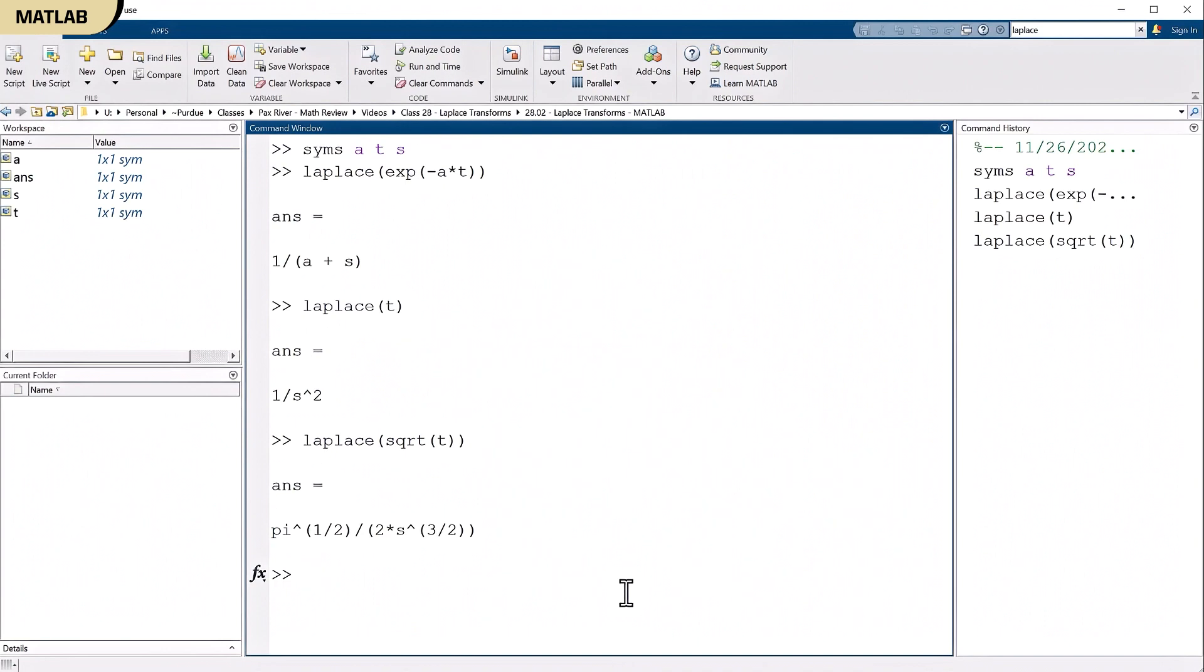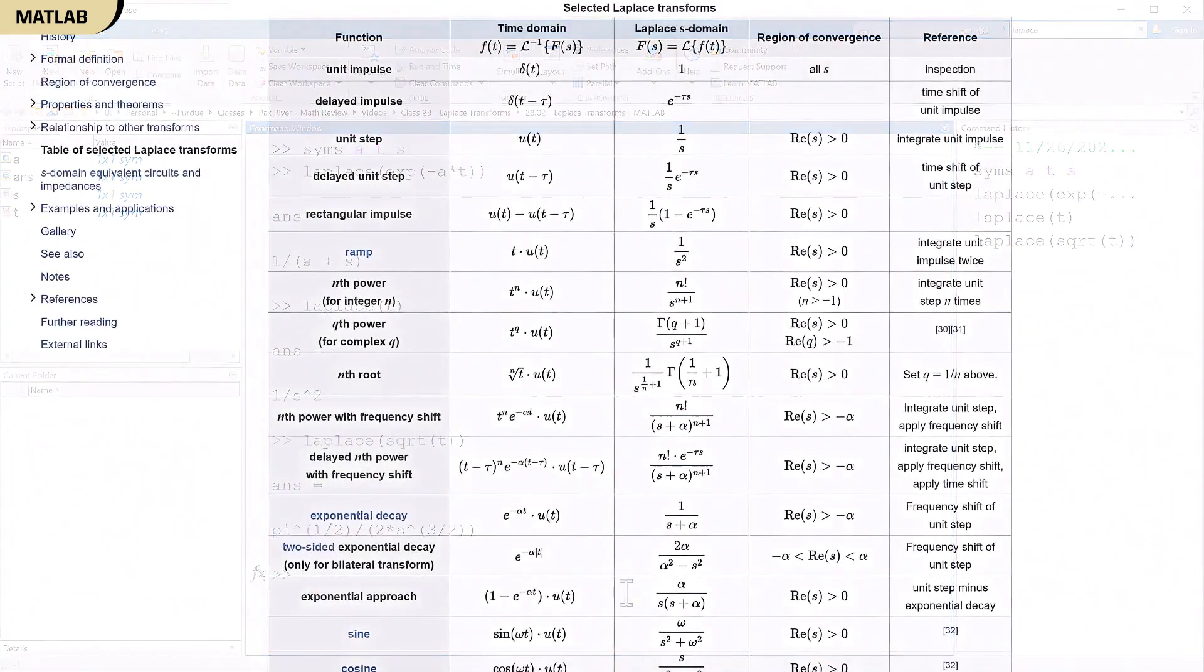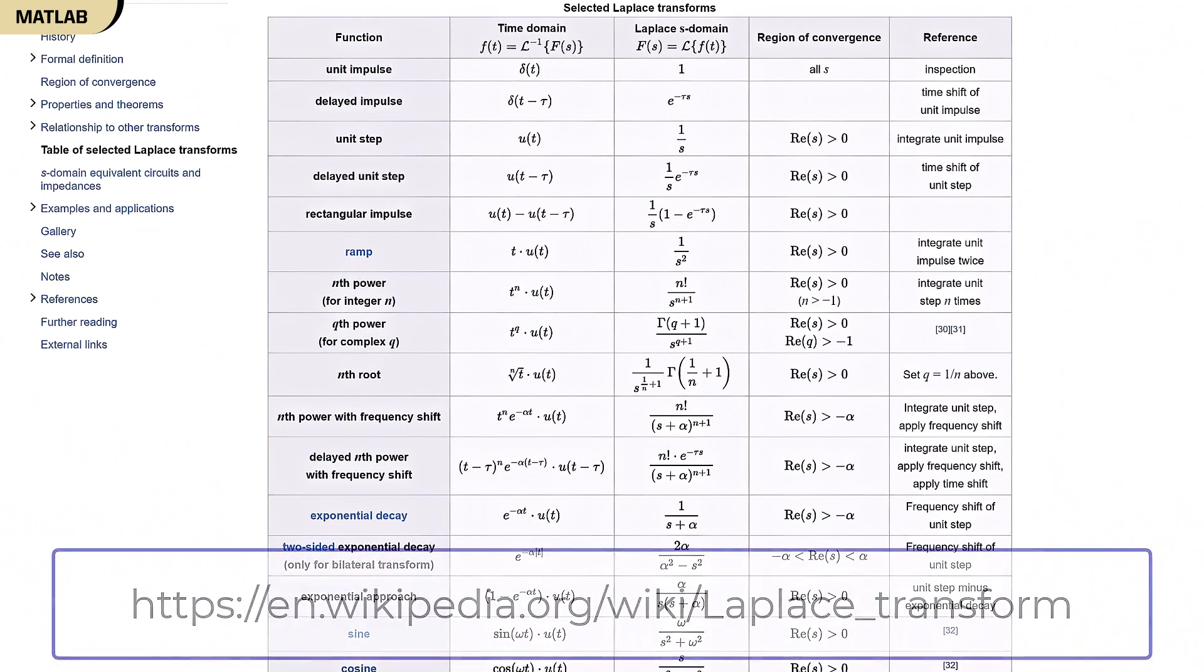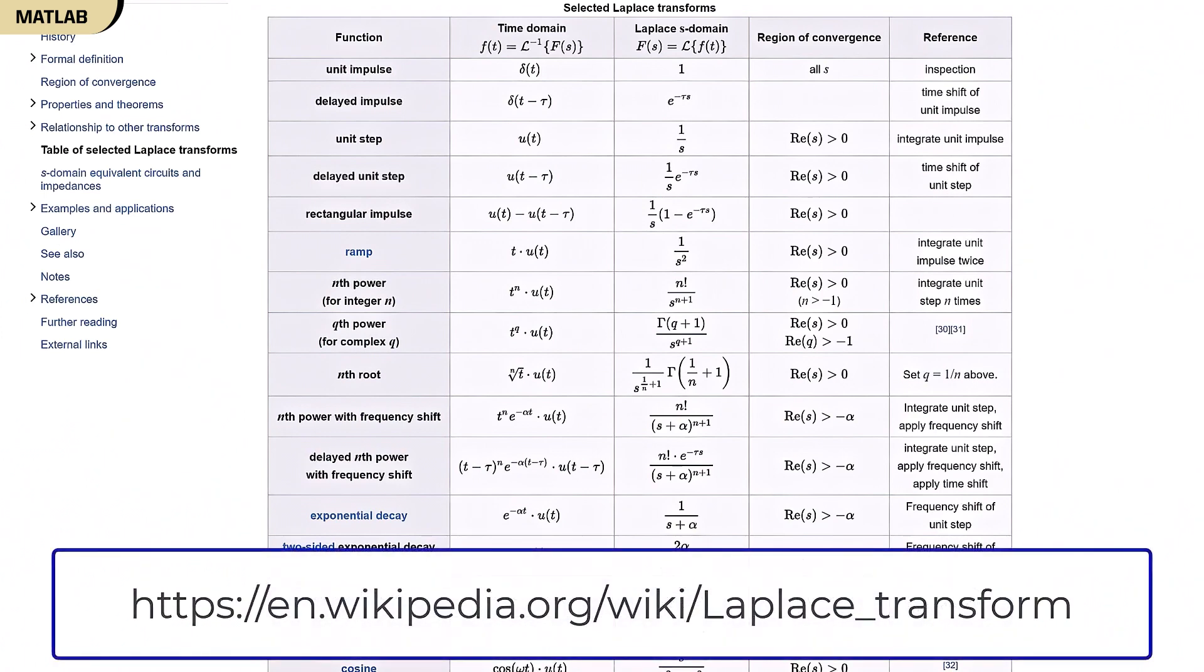And finally, I mentioned that there were places online where you could get lists of Laplace transforms. They're all over the place. One of the places you can go is Wikipedia. So here's part of that page and I'll put the address at the bottom of the page so you can look it up if you want to.